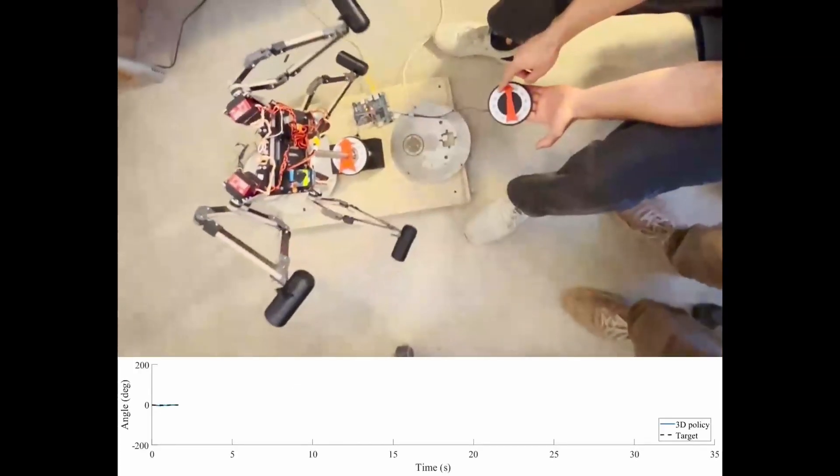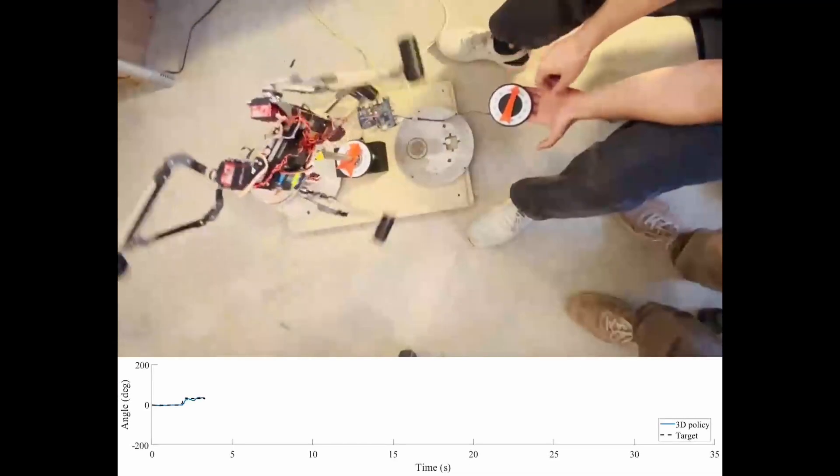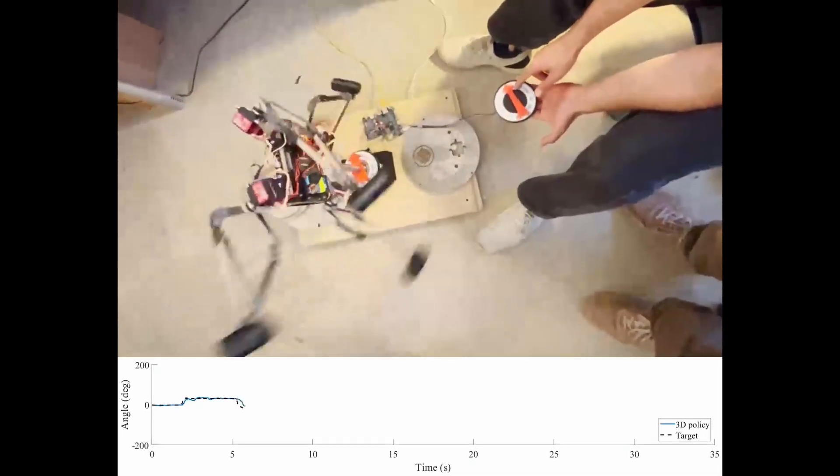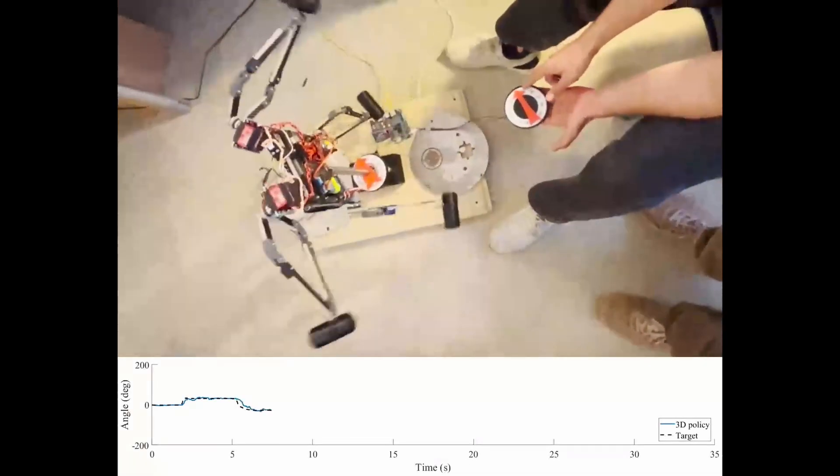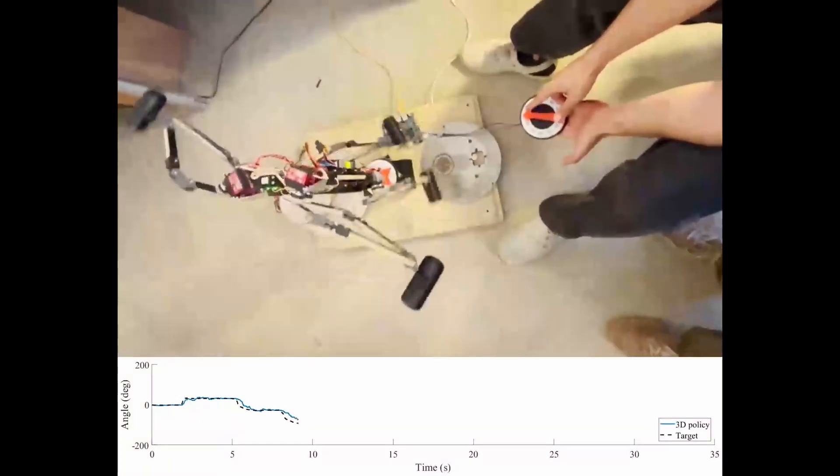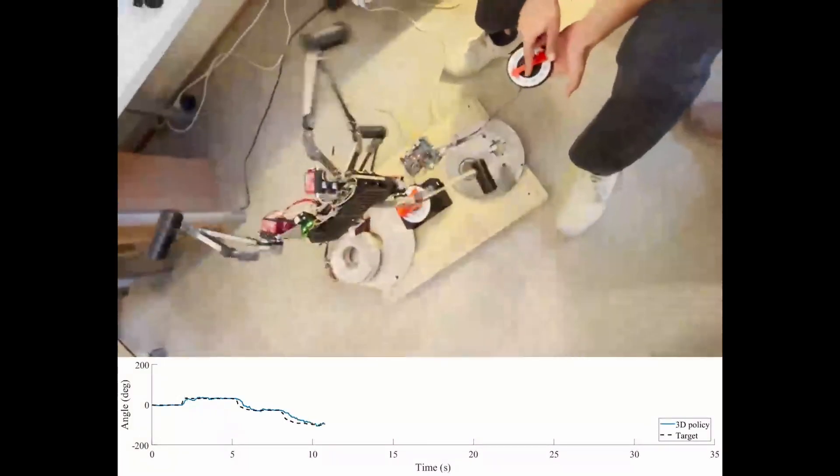Finally we present the performance of a general 3D policy that has not been trained on the pole. Here you can see a generic 3D policy following commanded reference signals from a potentiometer with a quadruped mounted in the roll configuration.